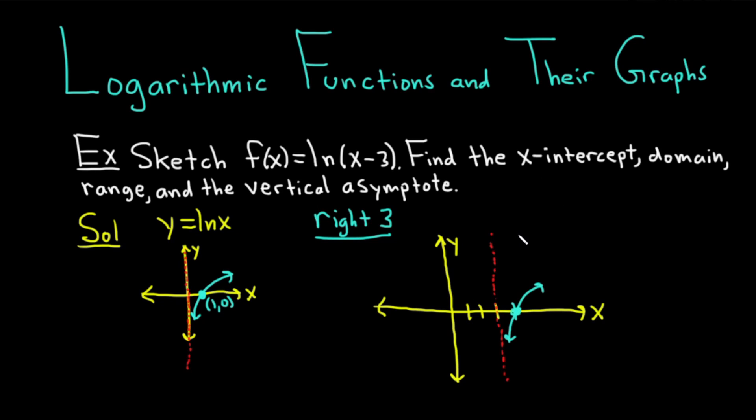We can now write down the things that were asked for in the question. So the x-intercept, in this case, would be the point 4 comma 0.